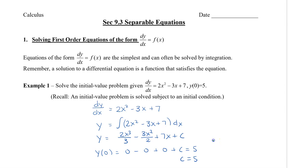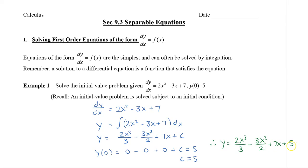Therefore, my equation is y equals 2x cubed divided by 3 minus 3x squared divided by 2 plus 7x plus 5.